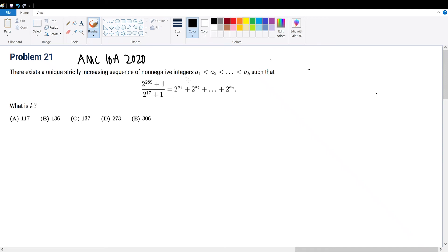AMC 10A 2020 problem 21. There exists a uniquely strict increasing sequence of non-negative integers a1, a2, all the way to ak, such that that fraction simplifies to that summation. What is k? Right off the bat, we see here that we're trying to factor out a fraction into some summation of many quantities. So let's follow the flow of the question.